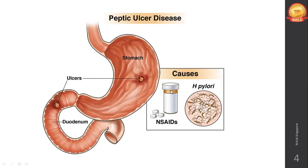In peptic ulcer, the stomach lining first undergoes inflammation. If left undiagnosed and untreated, this inflammation erodes into deeper tissues of the stomach and eventually reaches the blood supply, causing bleeding. Irritants in food further aggravate the inflammation. Over time, the ulcer digs deeper into the stomach lining, reaches blood supply, and the ulcer starts bleeding.